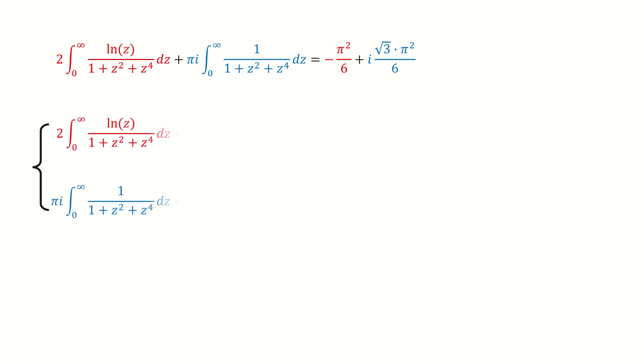I copy it here. For this equation, we let the real part equal the real part, and the imaginary part equal the imaginary part. For this red equation, we divide 2 on both sides. For this blue equation, we cancel the πi on both sides.